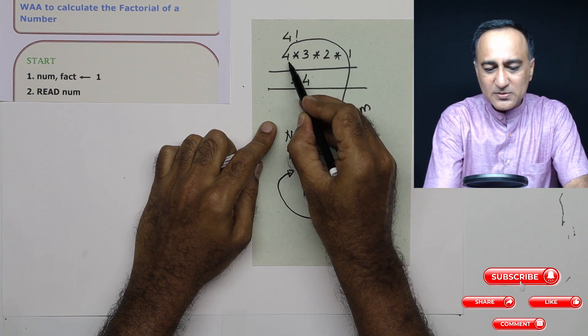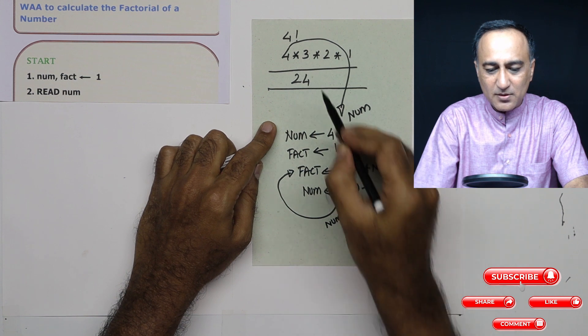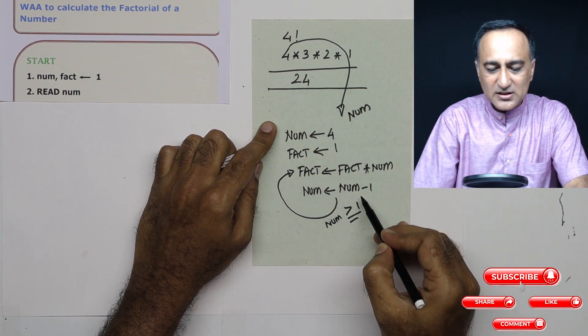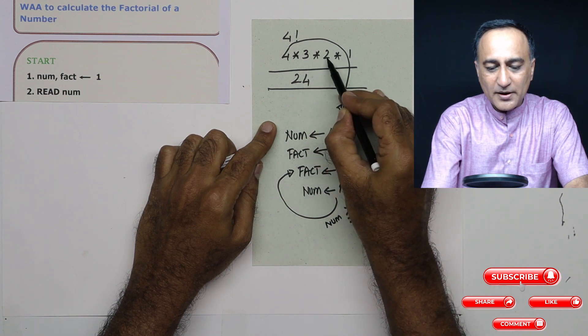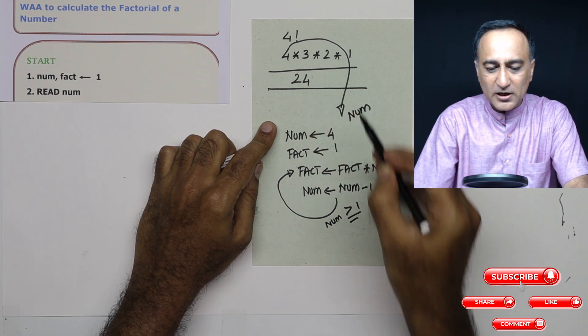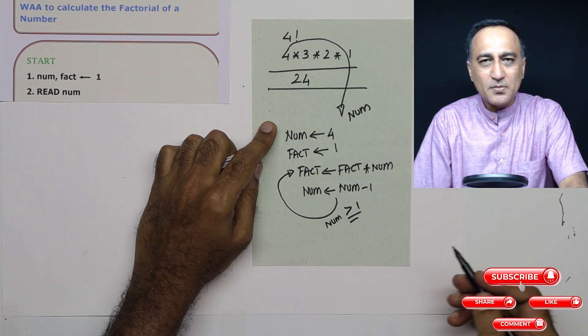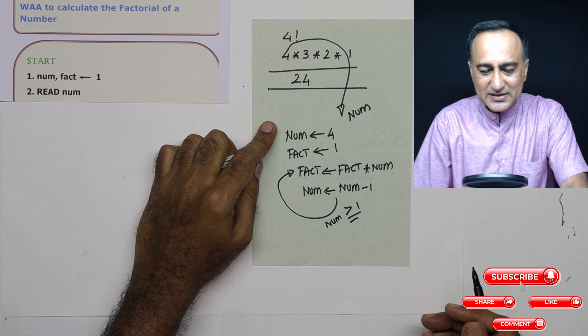So this way I'll first multiply it by four, next time number becomes three, I'll multiply four into three, which becomes 12. Next time number becomes two, I'll multiply 12 by two, it becomes 24. And I don't multiply it by one, because a number multiplied by one has no meaning because it's going to remain the same.